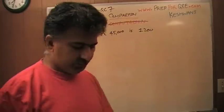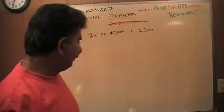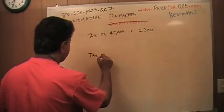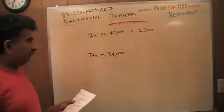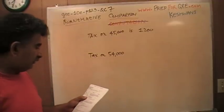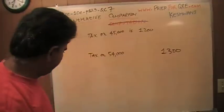Now we're getting into the nitty-gritty. The question simply is which quantity is bigger. The tax on 54,000, tax on the property value of 54,000 or 1,300. That's what we're asked to compare. Let's see what we can do.